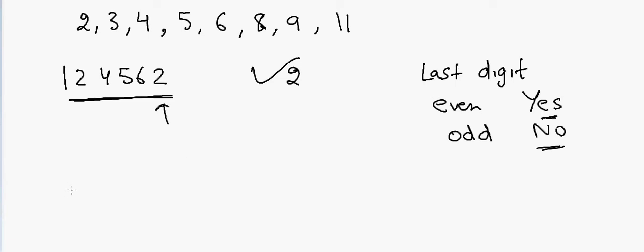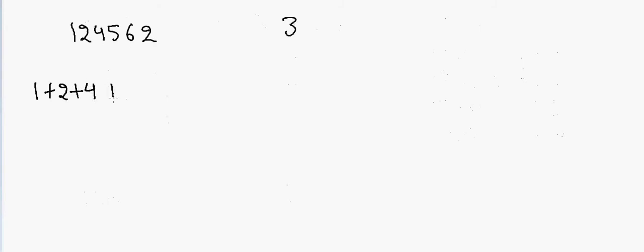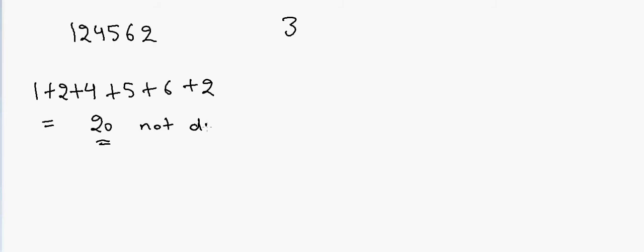Now let's talk about division by 3. If I have 124562 and I'm looking whether it's divisible by 3, what I'll do is add all these digits together. So 1 plus 2 plus 4 plus 5 plus 6 plus 2 gives me 3 plus 4 is 7, plus 11 is 18, plus 2 is 20. As you can see, 20 is not divisible by 3, so this number is not divisible by 3.